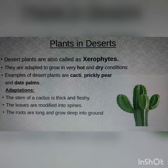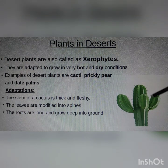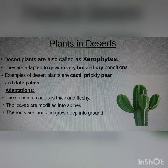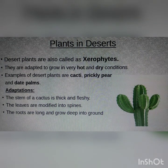Now let us see the adaptations found in these desert plants. The stem of a cactus is thick and fleshy. As you can see, this is the stem of the cactus — it's looking very thick and it is fleshy inside. What is the purpose of being thick and fleshy? Because it stores water inside which it can use for photosynthesis.